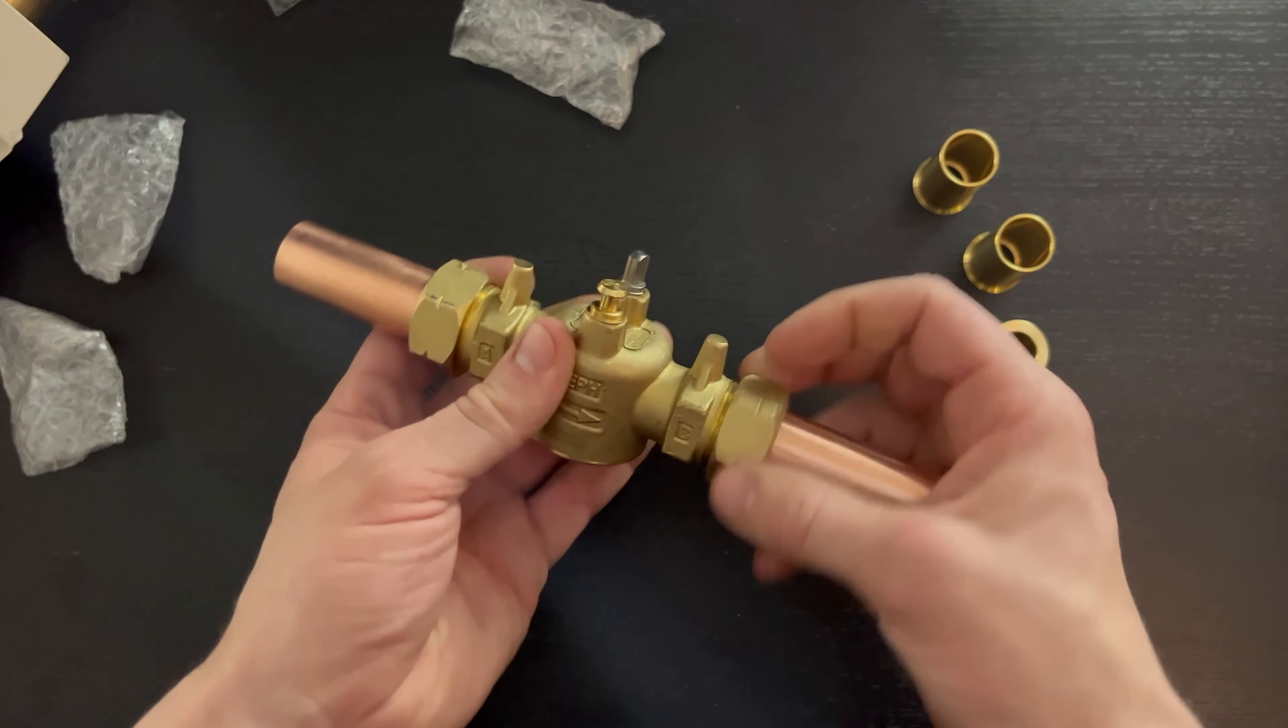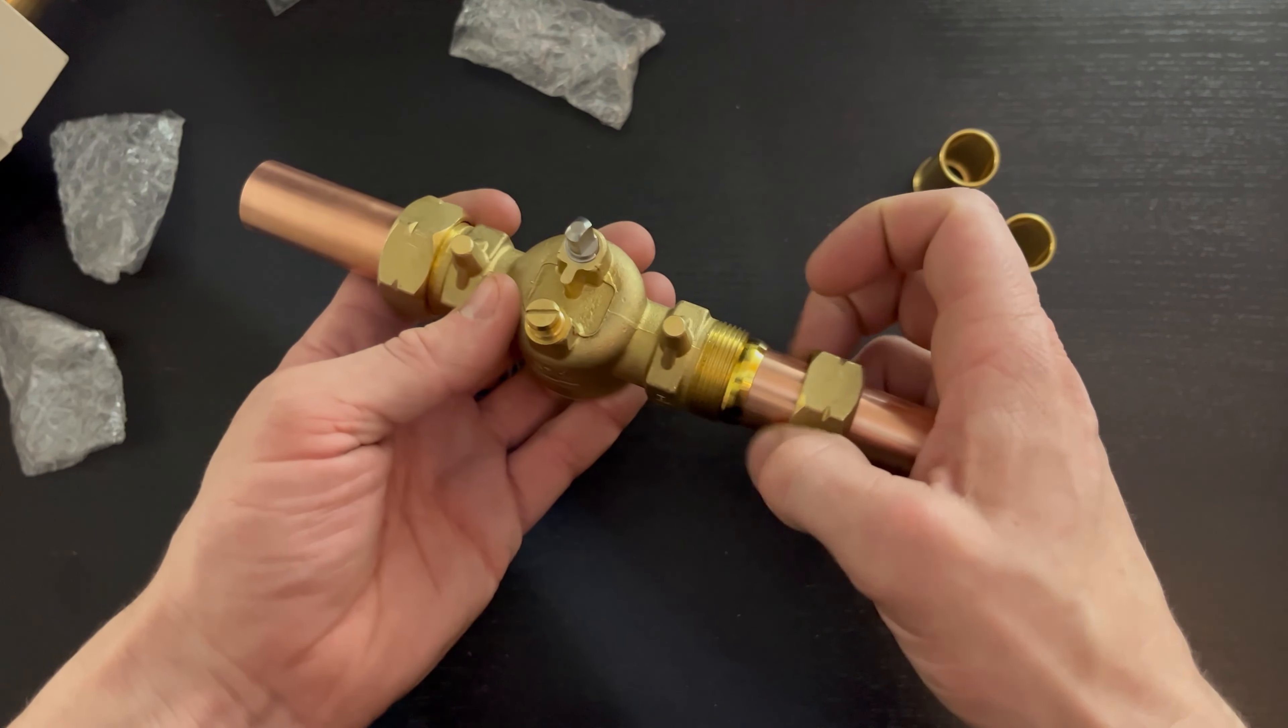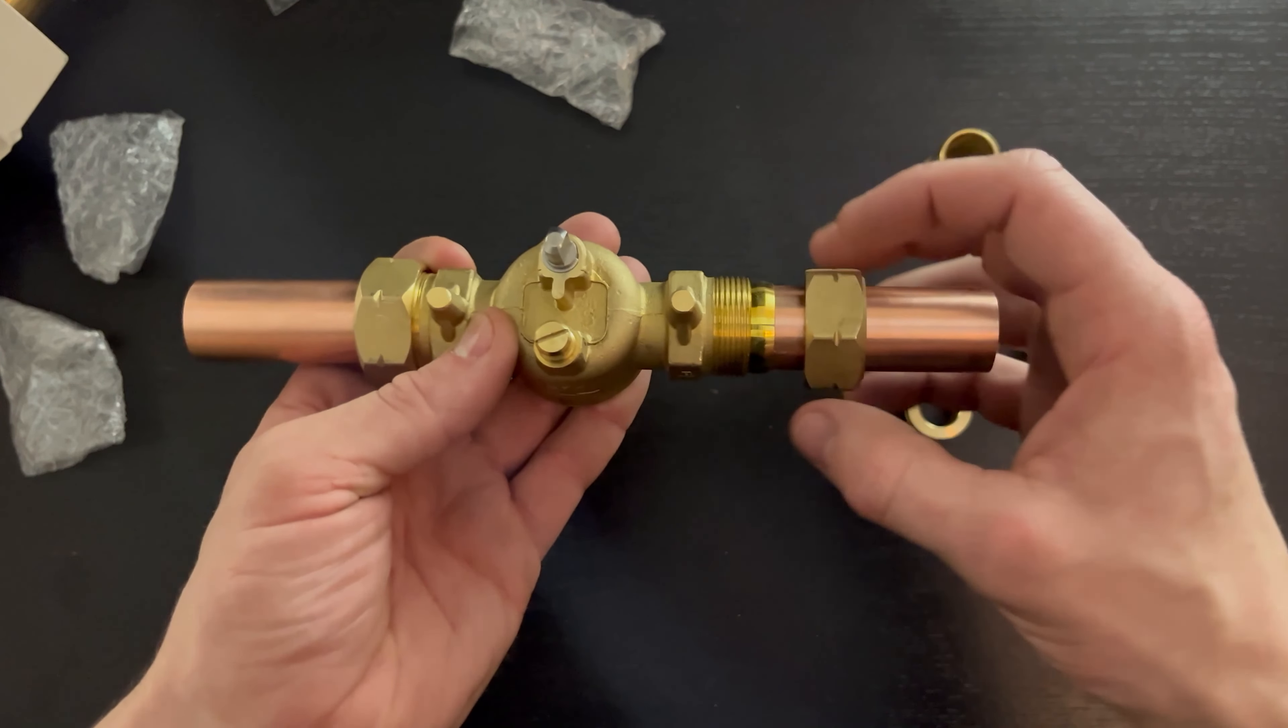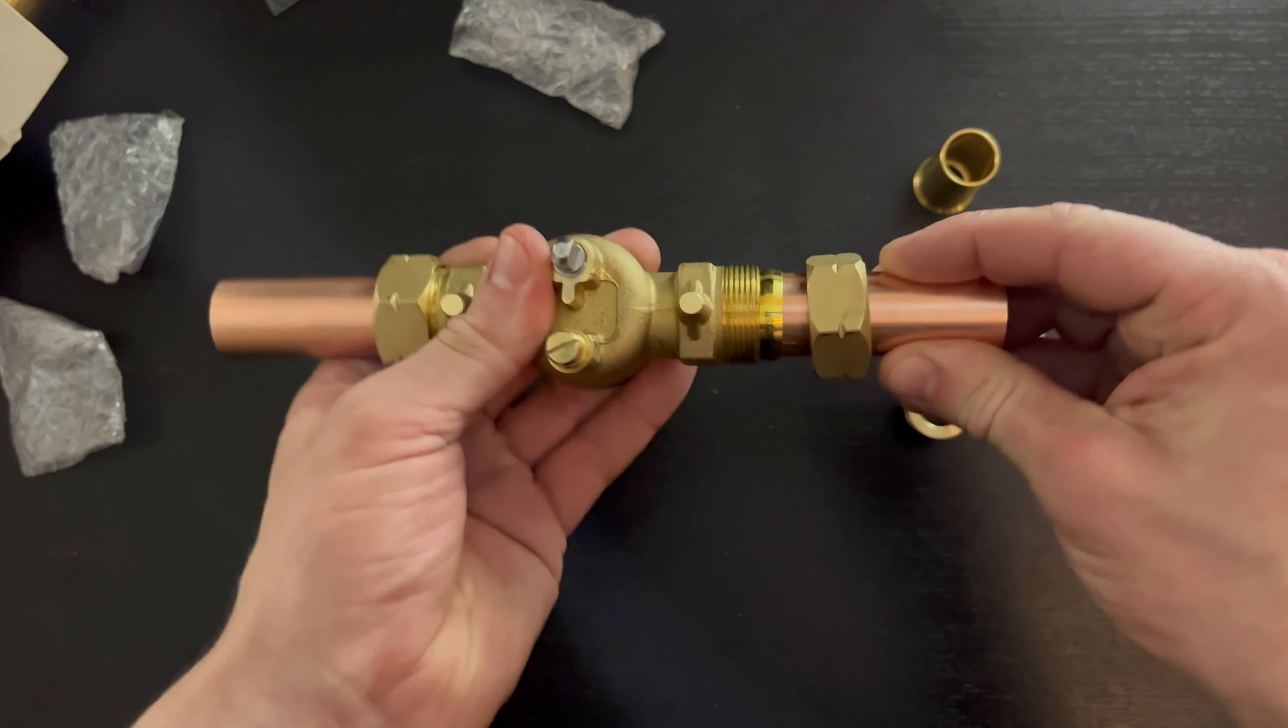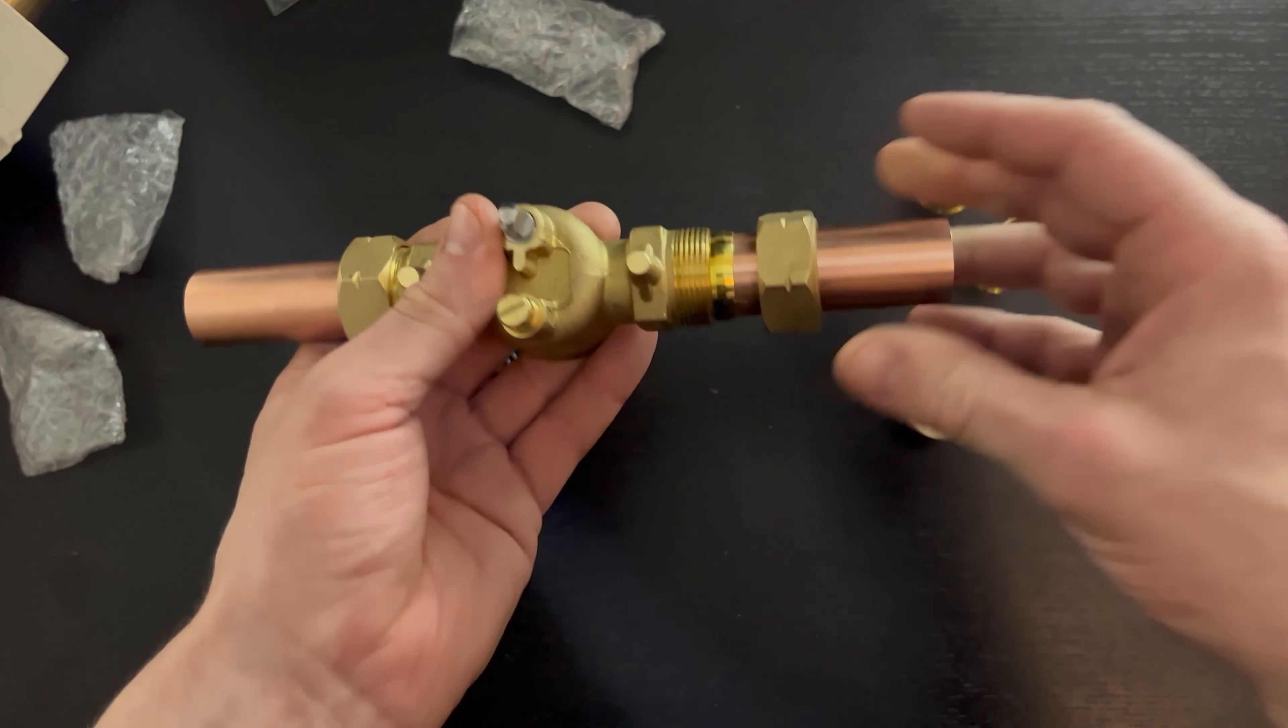What you'd normally find when you come to a zone valve is that you'd have a nut and an olive, but what this prevents you from doing is moving the pipe or valve side to side to release it.